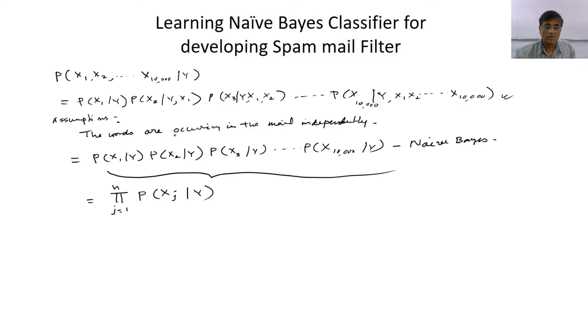Then what we do? We make the assumption that the words can occur in the mail independently and this assumption may not be true because in spam mail, many words are dependent. They will first tell you, you have 1 million dollars and then they will ask you, give your bank account number. So all this bank account number has a relation, they come together, they are not independent. But this is our compulsion to assume that the words are occurring in the mail independently. Why the compulsion? Just I told you that this is a very ugly formula to work out.